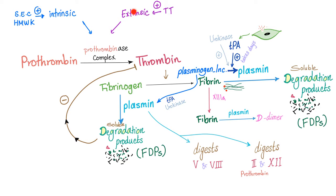Here's the whole story of fibrinolysis. First, the clot forms via the intrinsic and extrinsic coagulation pathways. The prothrombinase complex activates prothrombin into thrombin, which converts fibrinogen into fibrin. Plasminogen gets incorporated within the fibrin fibers together with TPA. TPA then activates plasminogen into plasmin — a process that takes days. Plasmin degrades fibrin into FDPs, fibrinogen into FDPs, and stabilized fibrin into D-dimer. It also digests factors 5, 8, 2, and 12.